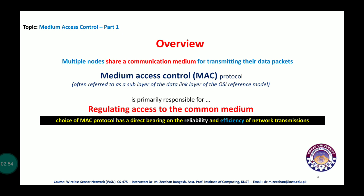The type and choice of MAC protocol has a direct impact on the reliability and efficiency of network transmission. We will discuss this further when covering characteristics of MAC protocols, particularly for wireless sensor networks, which are resource-constrained networks.